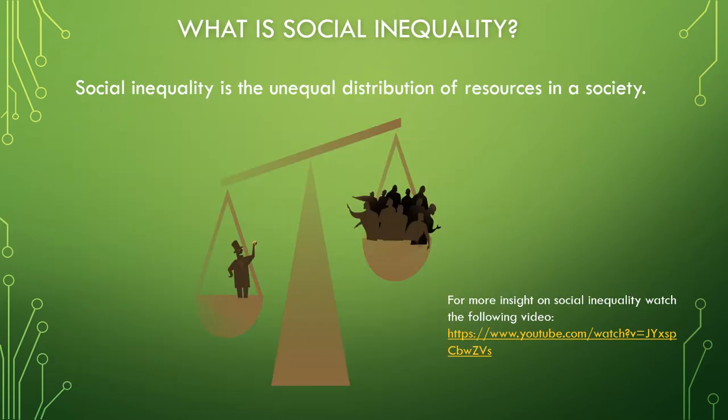What is social inequality? In simple terms, social inequality is an unequal distribution of resources in a society. It is a multi-dimensional concept where groups are disproportionately affected, and these groups are predominantly ethnic or racial minorities. These minorities would have lower income in a society, lower education opportunities, and reduced access to quality health care.